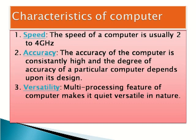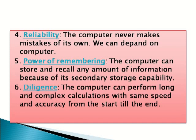Characteristics of computer: speed, accuracy, versatility, reliability, power of remembering, and diligence. The computer can perform many tasks at a time, also known as multiprocessing, which makes it quite versatile in nature. The computer can perform long and complex calculations with the same speed and accuracy from start to end, making it diligent in nature. Unlike humans, whose speed of work slows down over time.